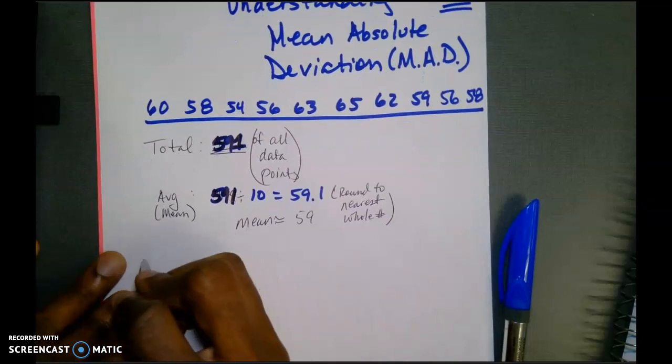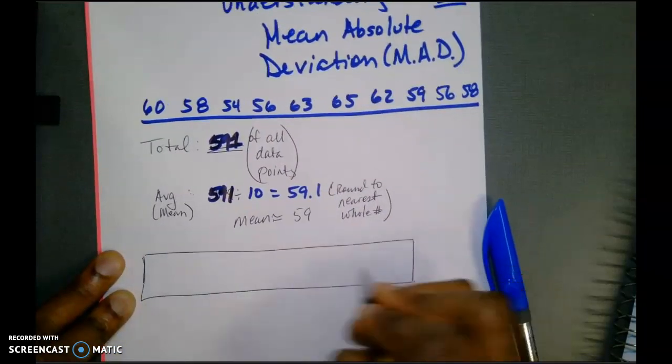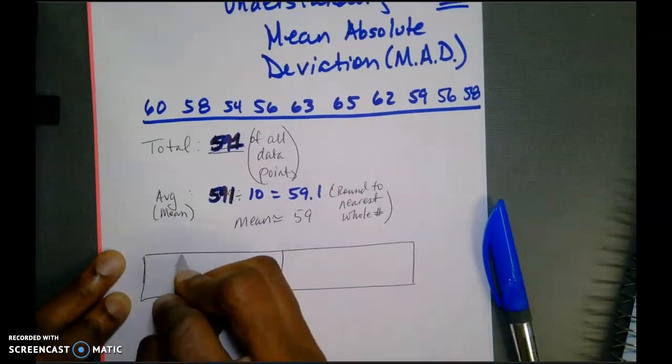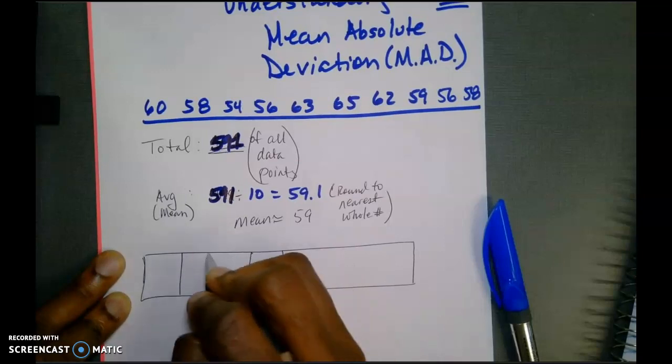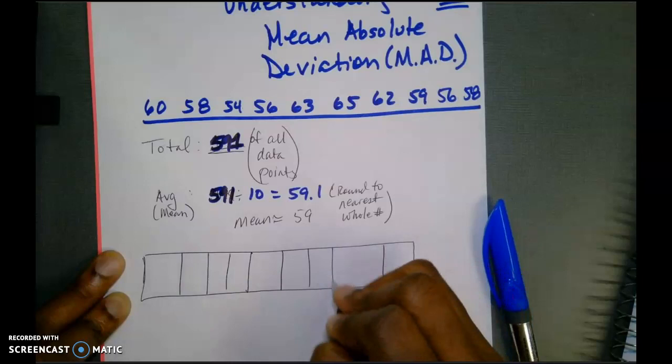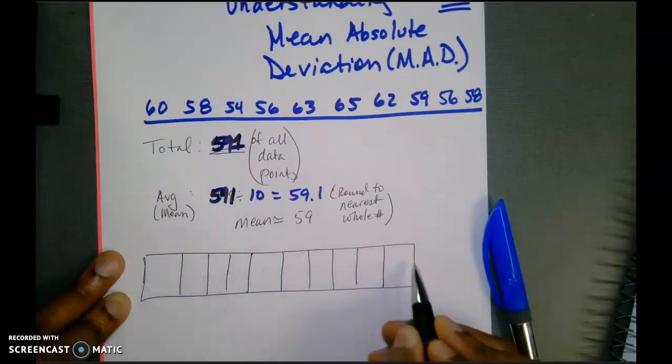Now I want to take all of my data points. I'm going to make a bit of a chart here. So I have my ten data points. One, two, three, four, five, six, seven, eight, nine, ten.